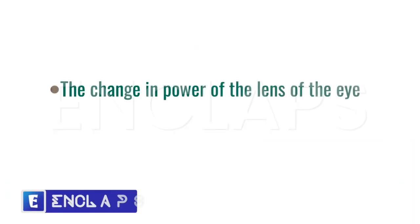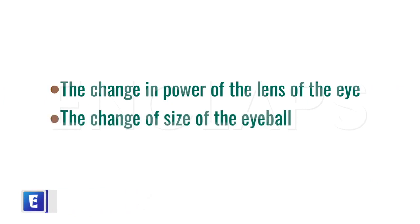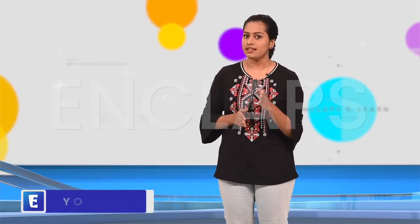In the first two cases, why is the image formed in front of and behind the retina? The reasons can be the change in the power of the lens of the eye and the change of the size of the eyeball. If a similar image formation is happening in anyone's eyes, their vision will be distorted.